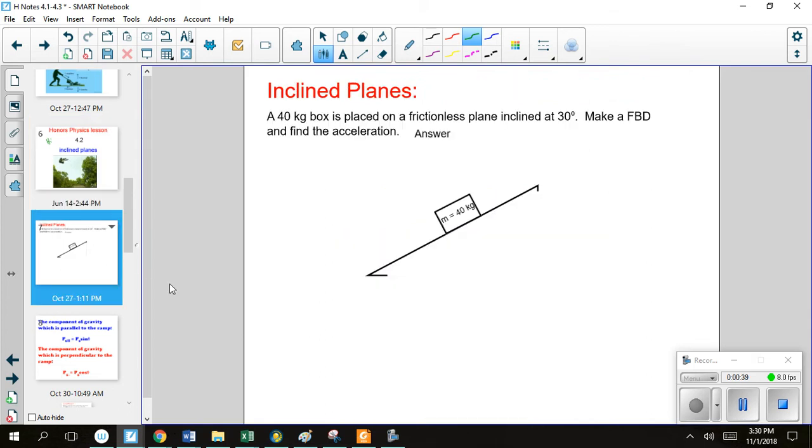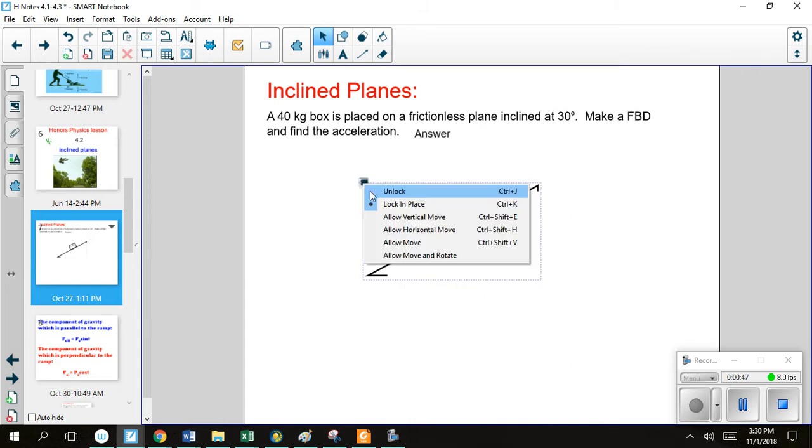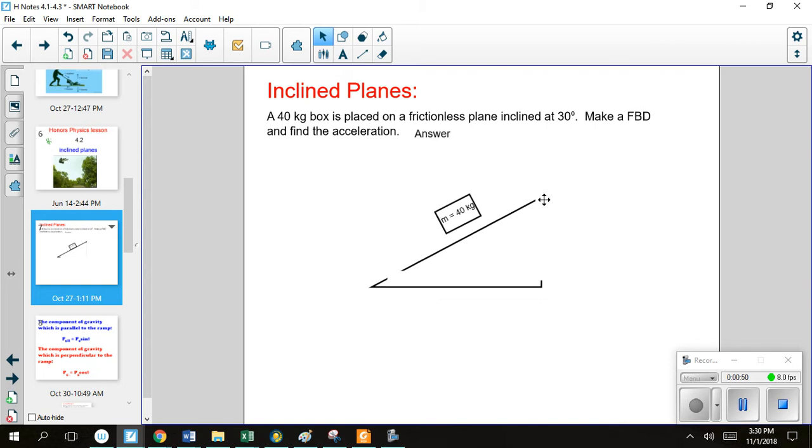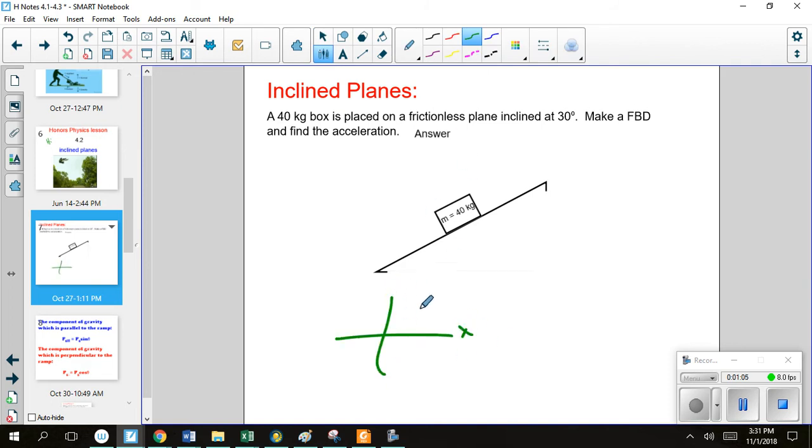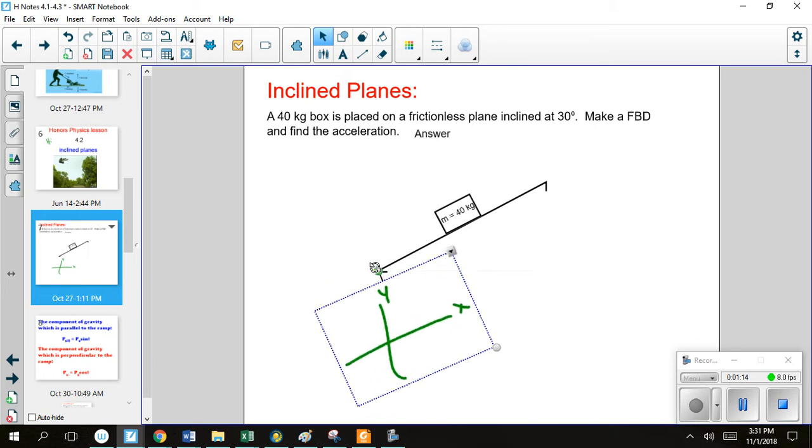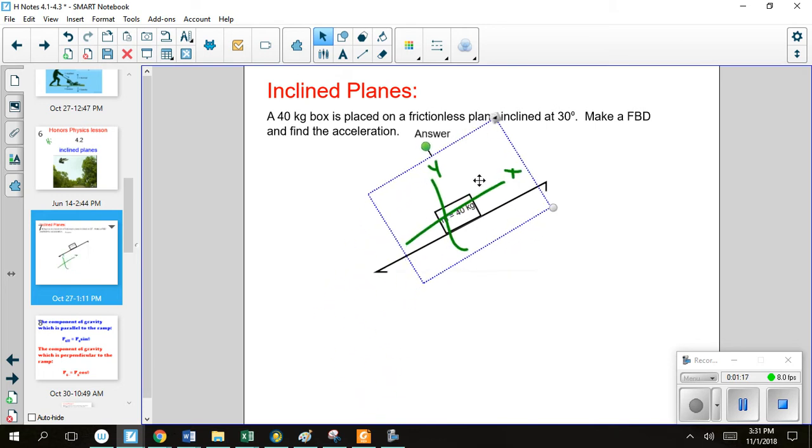Alright, so picture this. Normally we have an object on an x and a y axis. And that works great when everything is nice and flat. But, like right here, all on an angle. So that doesn't really change our x and y. It just puts it on an angle.